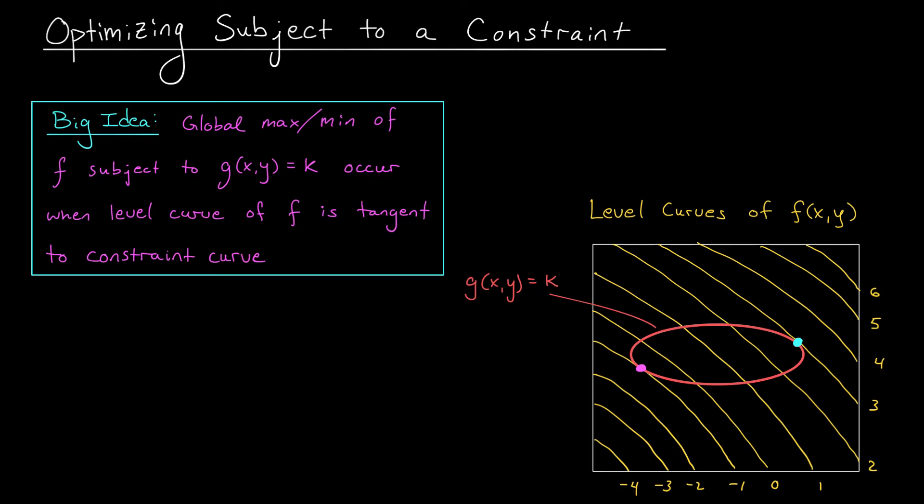Okay, we've just discovered the big idea behind the method of Lagrange. This is exciting because it's telling us where to look for the extreme values of our function, subject to this constraint. It says, look for points where the level curves of f are just tangent to the constraint curve, g(x,y) equals k. But, how do you do that mathematically? Like, if I were to give you functions f and g, and I said, find the points where the level curves of f are tangent to this constraint curve, I mean, how would you do that? It sounds tough, right?